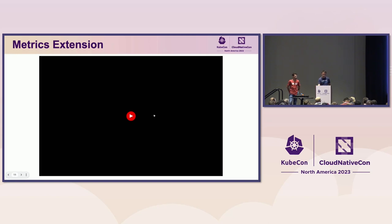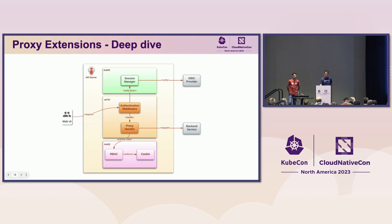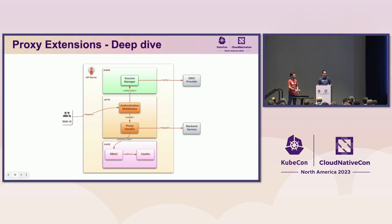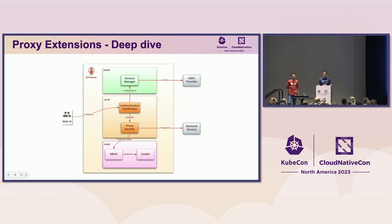That concludes the metrics extension demo — we run this in production at Intuit in more than 300 clusters. The proxy extension actually works in conjunction with the UI extension. The UI extension can communicate with the ArgoCD API server, and every single operation provided by the ArgoCD API server can be leveraged to build any UI extension today. But in some cases, like the metrics extension, we need to retrieve metric data from Prometheus, which we don't have available in the ArgoCD API. So the idea is extending the ArgoCD API to proxy requests.